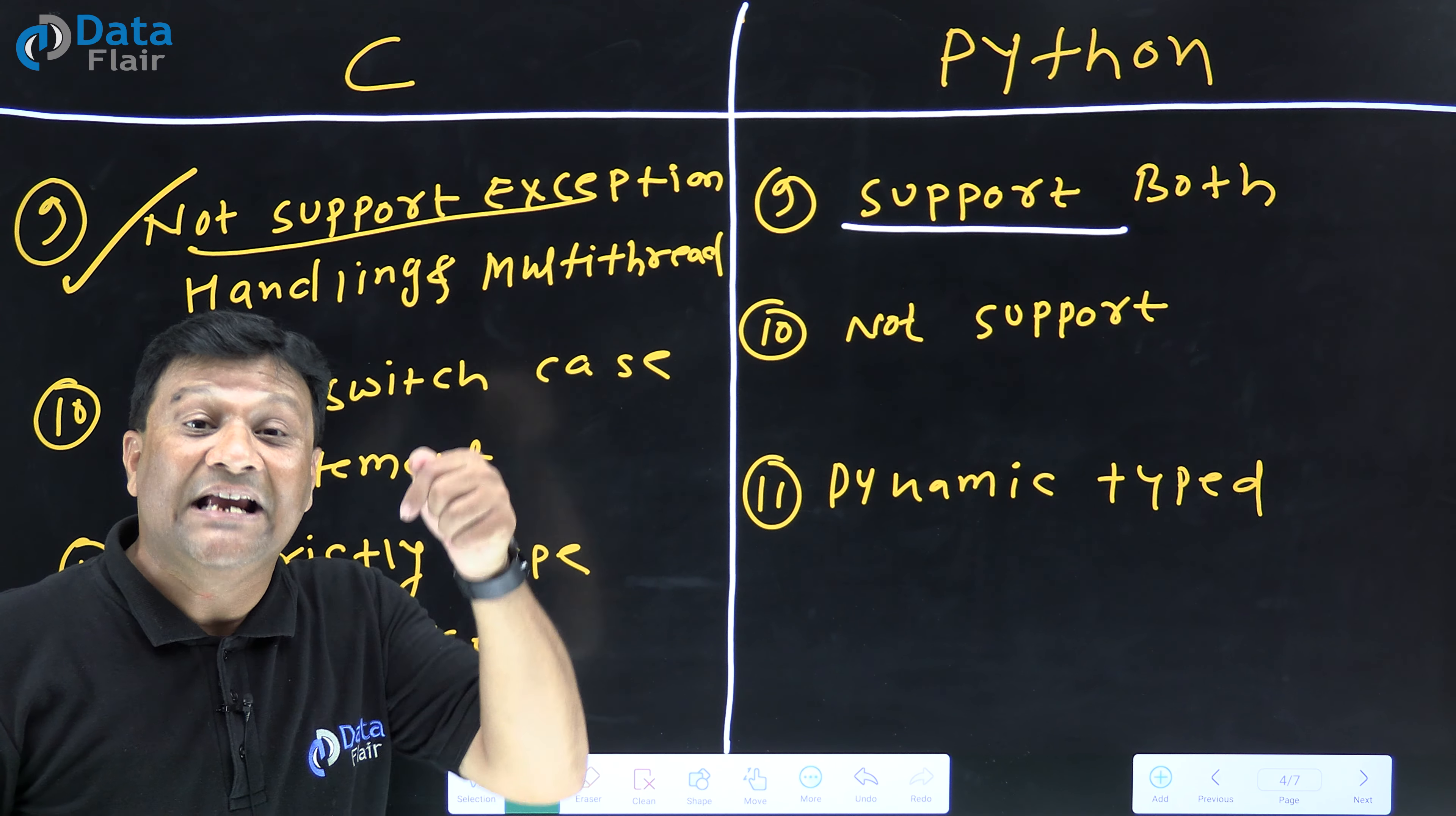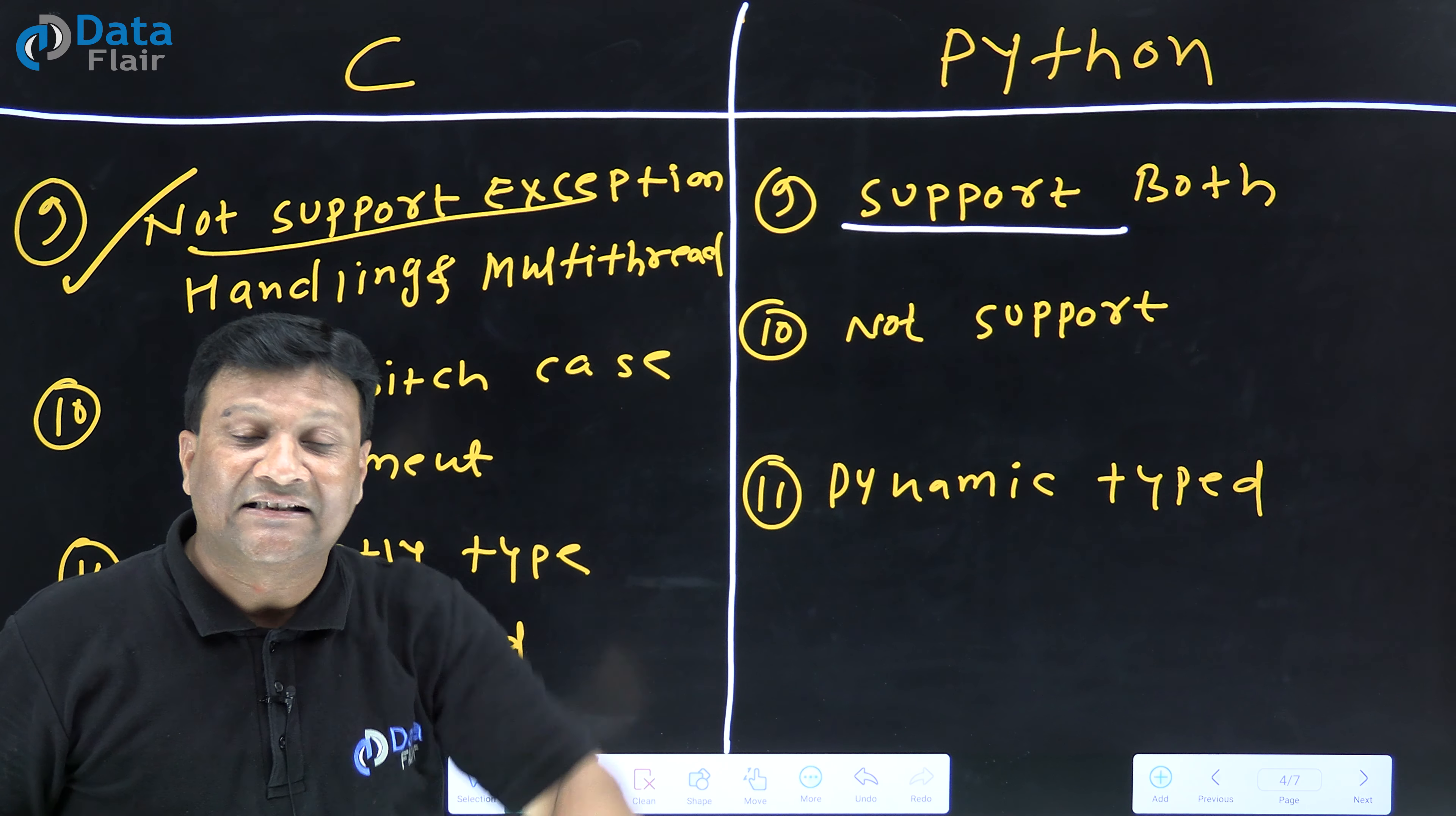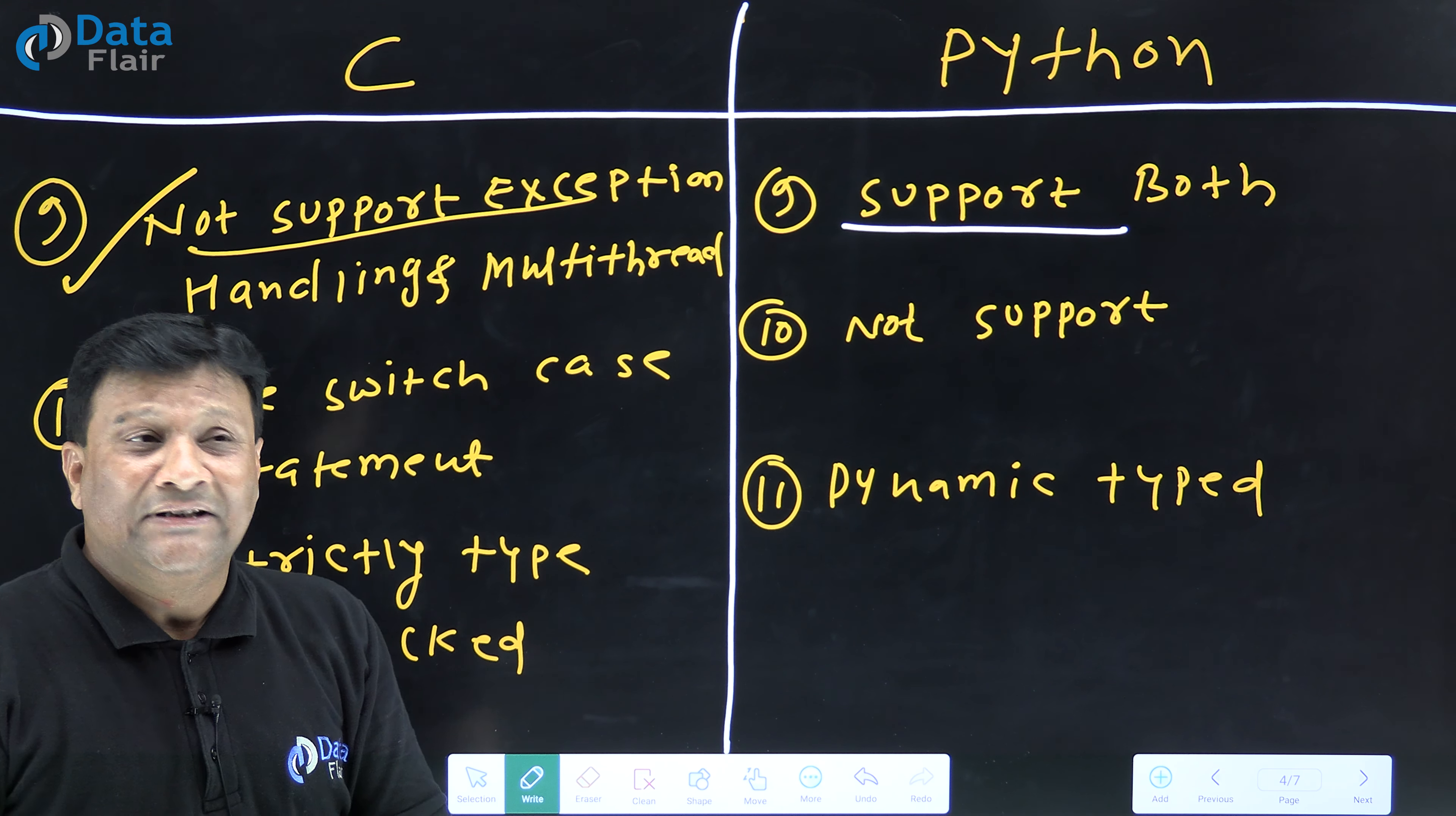C is a single threaded language. C is a single threaded language, while Python is a multi-threaded language. Always remember, C is a single threaded language and Python is a multi-threaded language.